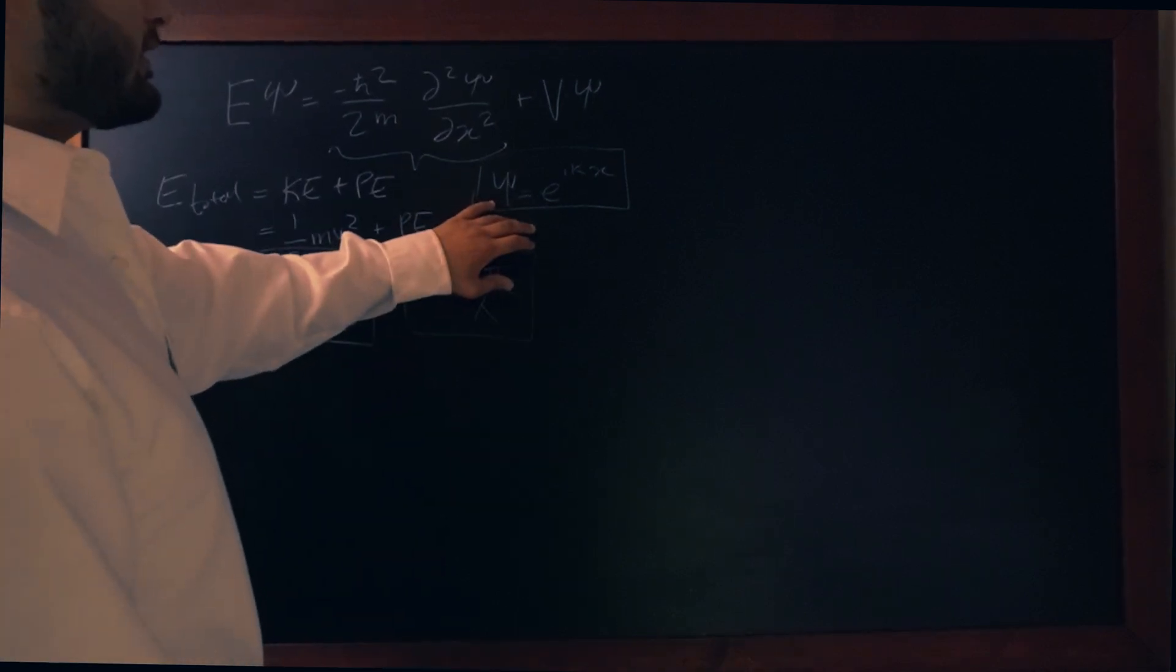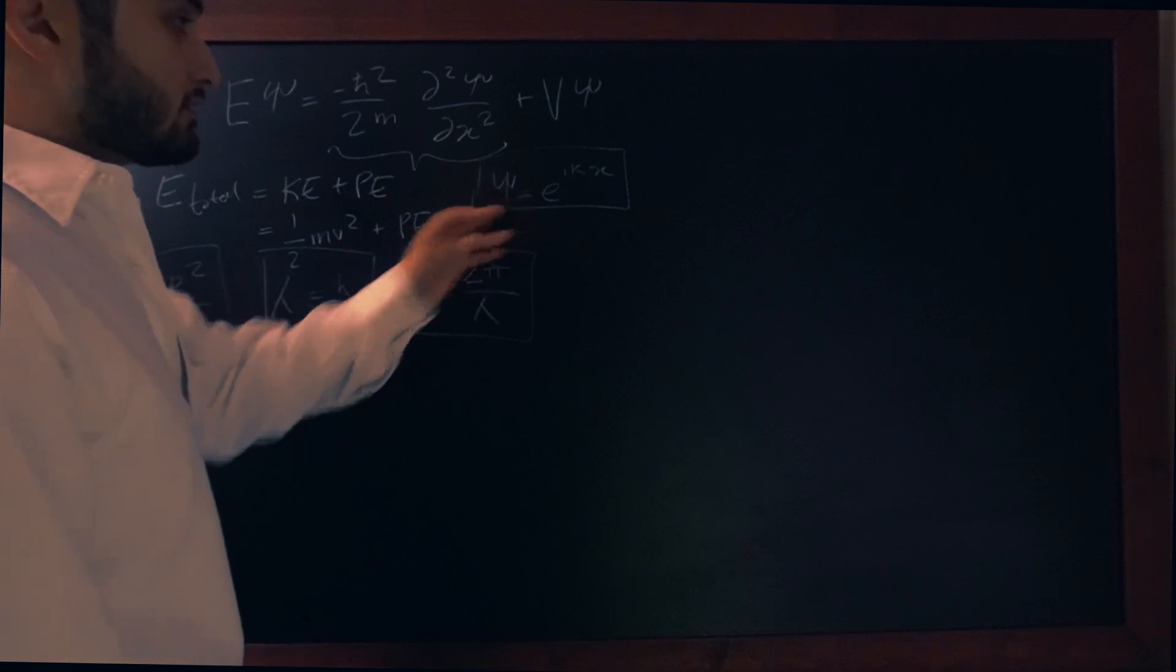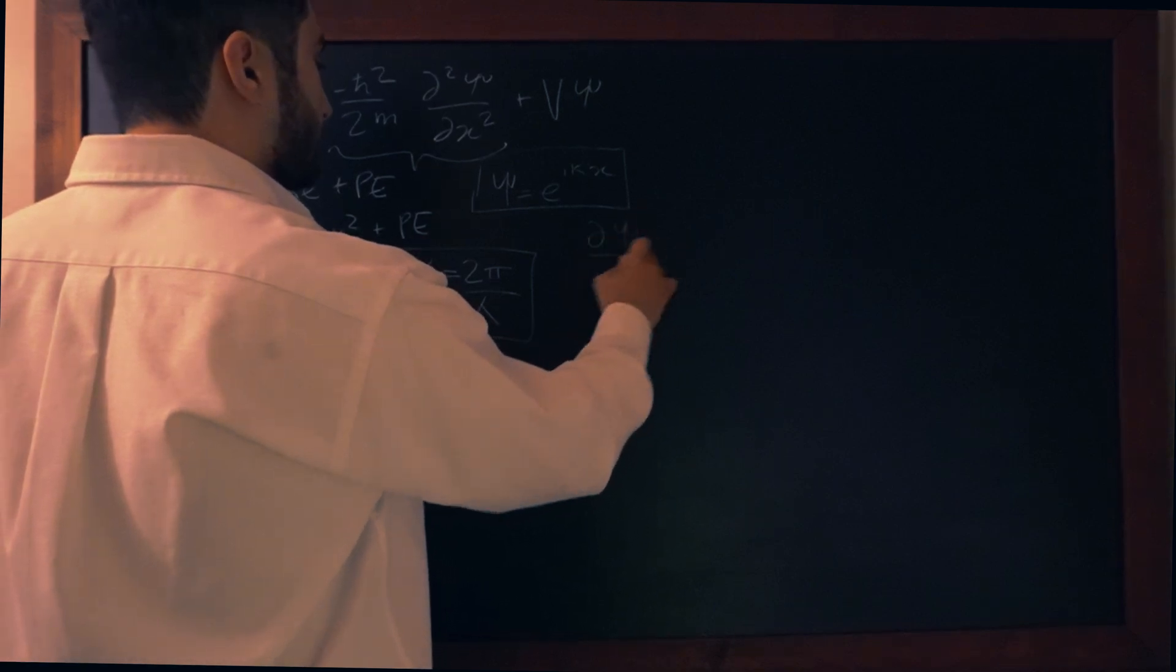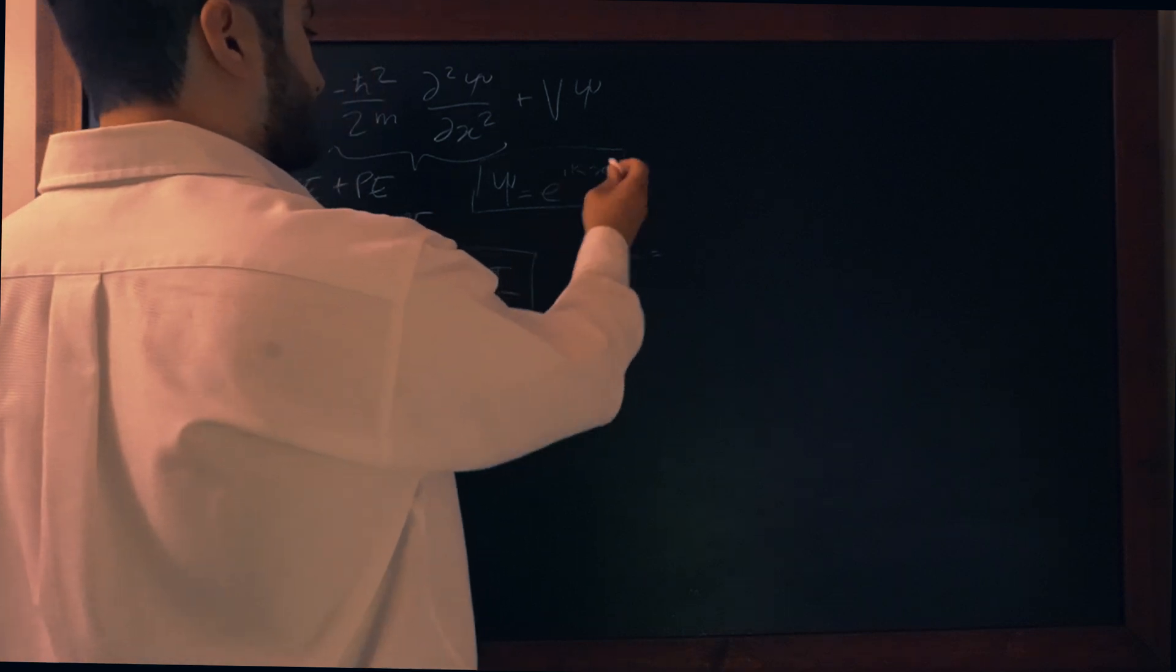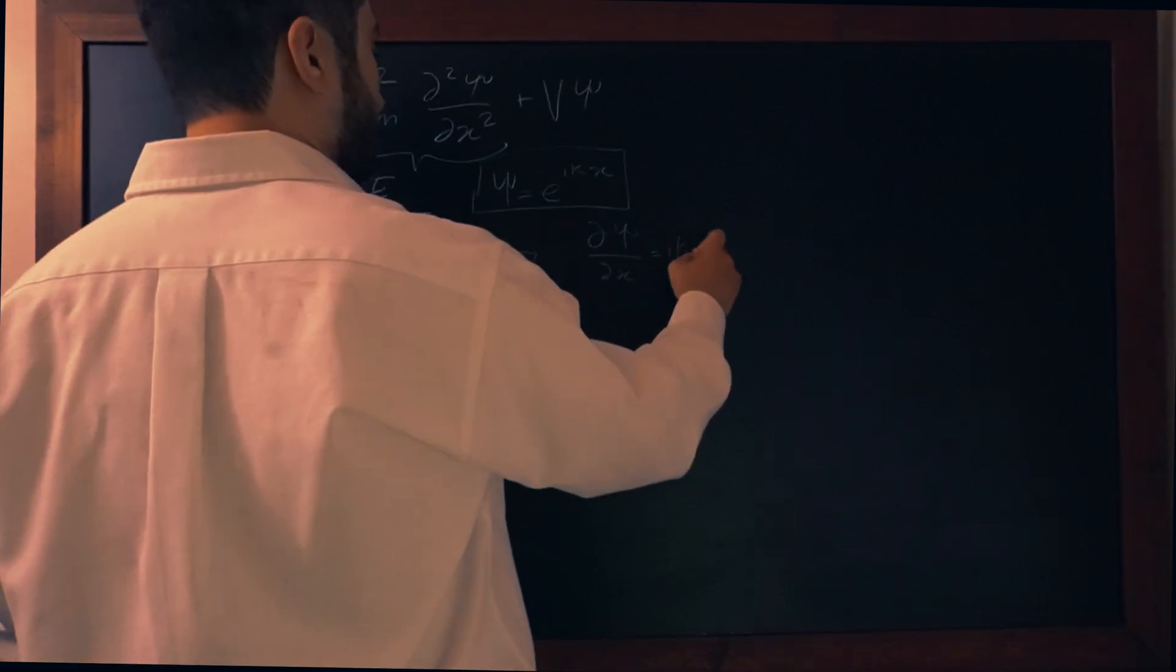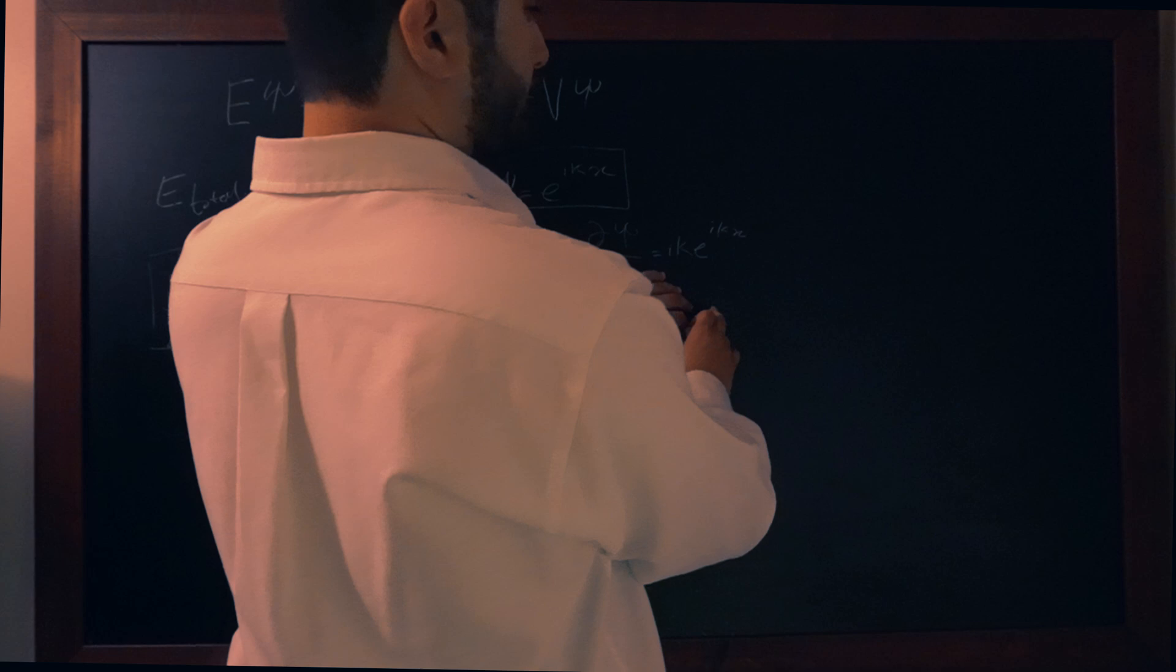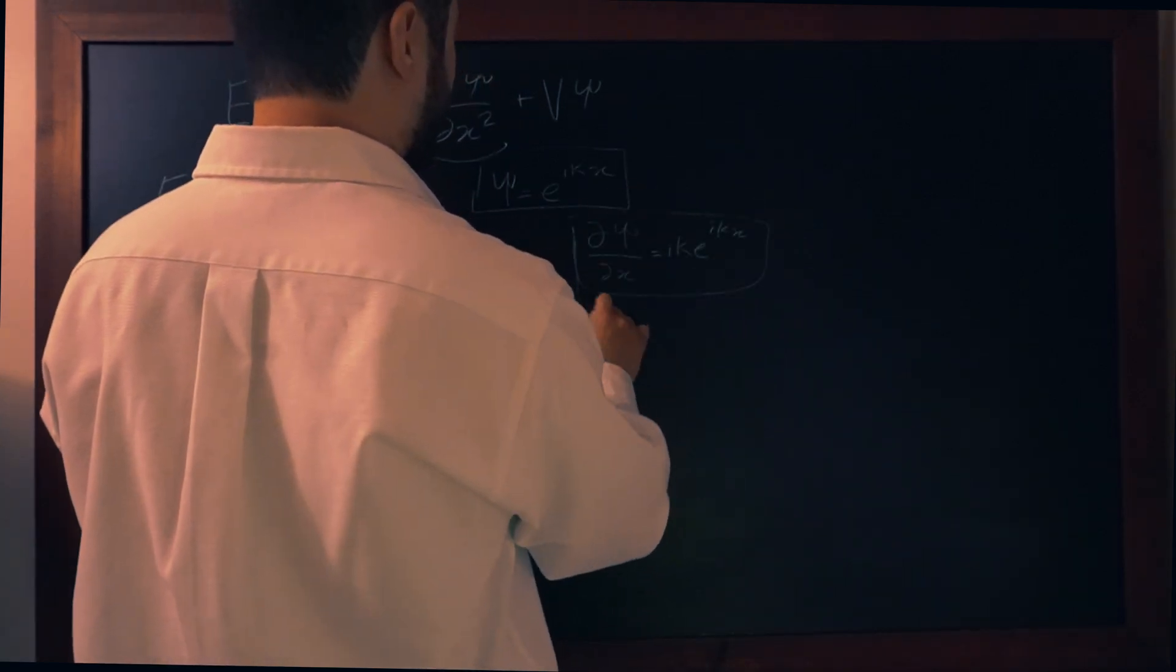So really quickly let's actually take the derivative of this. So to do that we'd be basically saying that the derivative of ψ with respect to x is equal to, we're going to bring these constants down, so we end up with ik e to the ikx. And we're going to take the derivative one more time of this function.